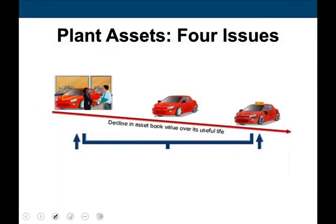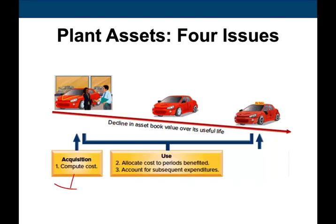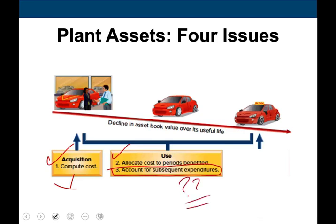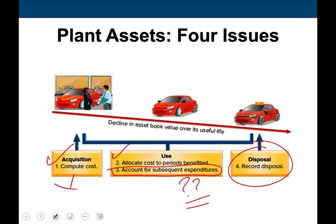Let's go back and review what issues we have to deal with when we buy plant assets. First, we have to determine the cost of the plant asset. Then we have to allocate the cost to the period benefited — this is depreciation, which we already talked about. In this session we're going to look at topic three: accounting for subsequent expenditures. That means after you buy the asset and you spend money on it, how are you going to treat that expenditure? The next topic will cover disposal.